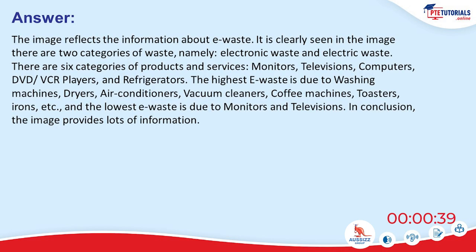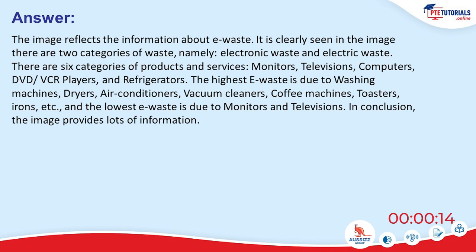The image reflects information about e-waste. It clearly shows two categories of waste: electronic waste and electric waste. There are six categories of products including monitors, televisions, computers, DVD/VCR players, and refrigerators. The highest e-waste is due to washing machines, dryers, air conditioners, vacuum cleaners, coffee machines, toasters, and irons. The lowest e-waste is due to monitors and televisions.